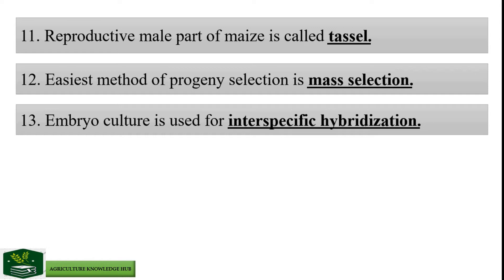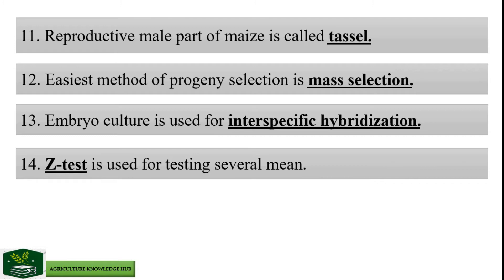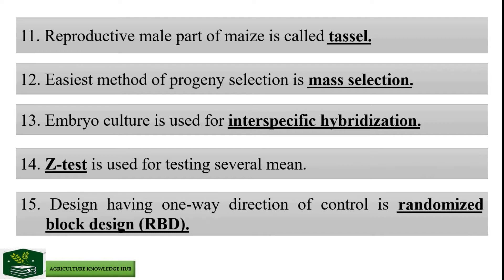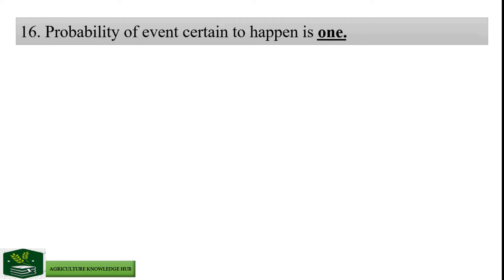Z-test is used for testing several means. Design having one-way direction of control is Randomized Block Design, also called RBD. Probability of an event certain to happen is 1. Level of significance consists of type 2 error.